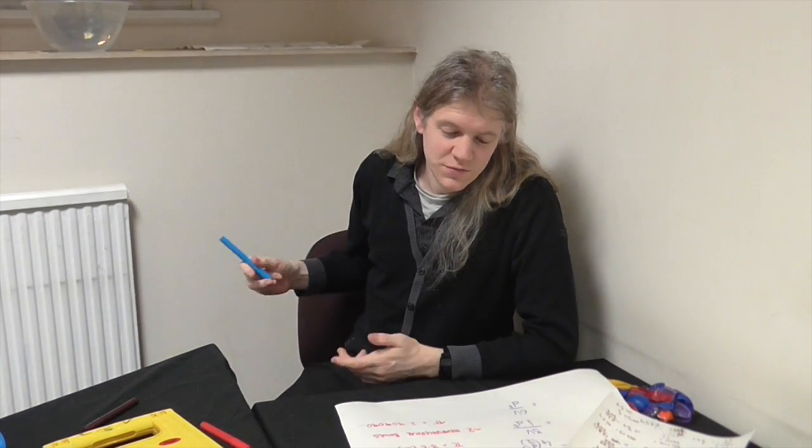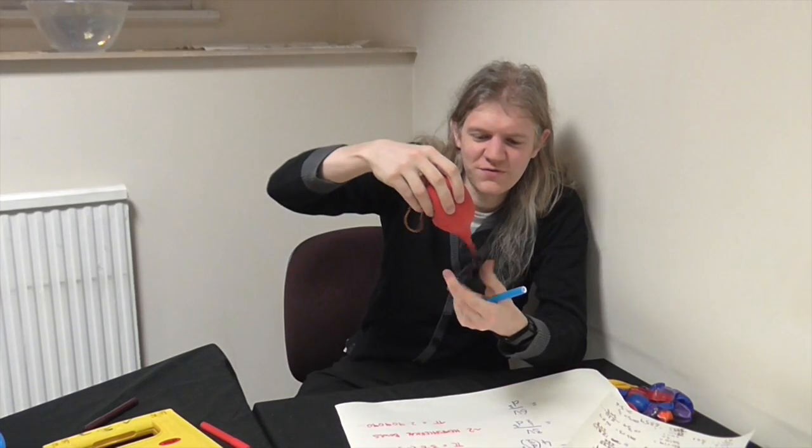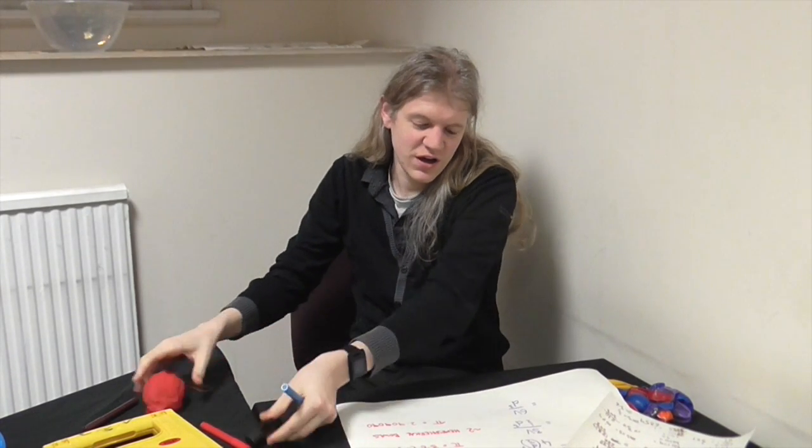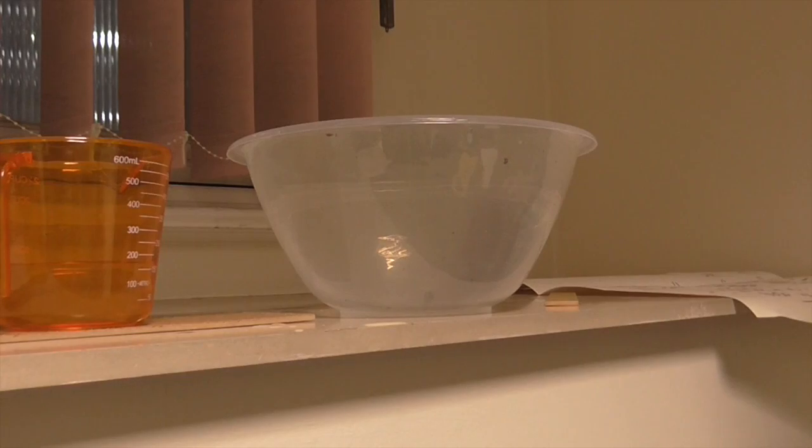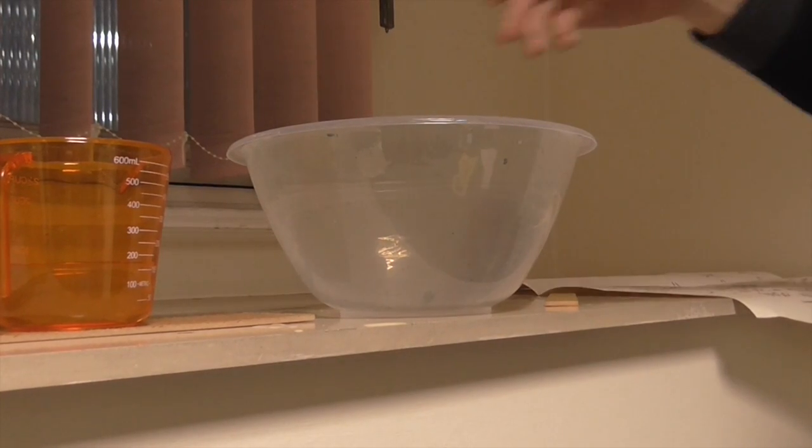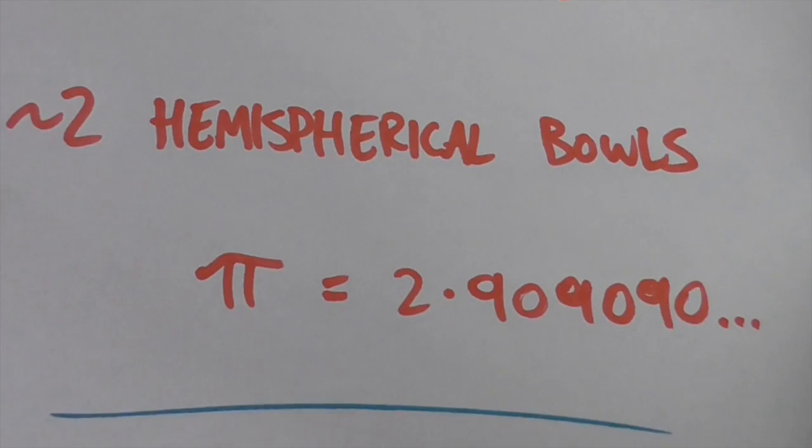Okay, so what's your final value or values for pi? Well, so the initial one I did with 10 small balloons gave me 3.28 and change. This large balloon, when it was fully inflated, gave me 3.215 and change, which is still a bit high. And I then tried with, I found two kind of roughly hemispherical balls, which I filled completely to the brim with water. And they gave me a value of 2.909 recurring-ish.